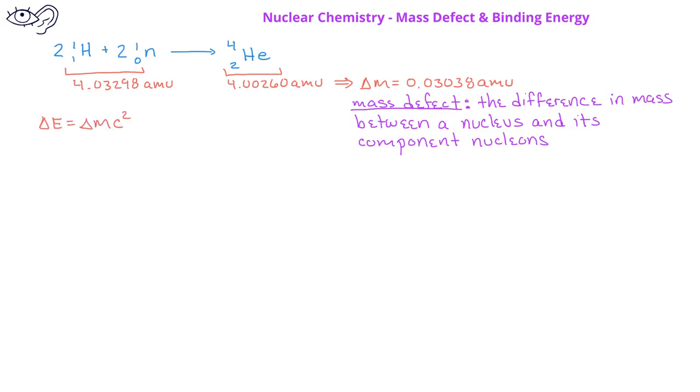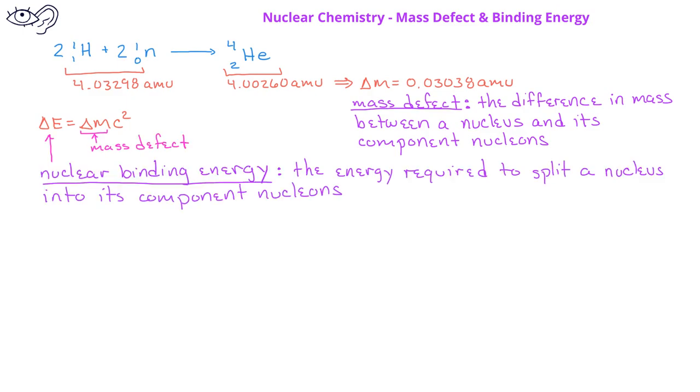Einstein's equation can be used to determine the nuclear binding energy, which is the energy required to break down a nucleus into its component nucleons, and is based on the change in mass or the mass defect. Based on Einstein's equation, it has been found that a change in mass of 1 AMU results in an energy of 1.492 times 10 to the minus 10 joules, or 931.5 mega electron volts, which is a unit often used by nuclear physicists.